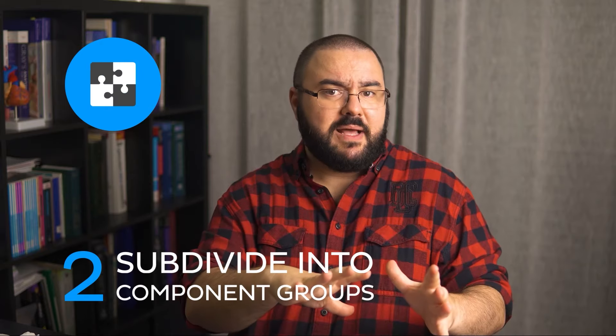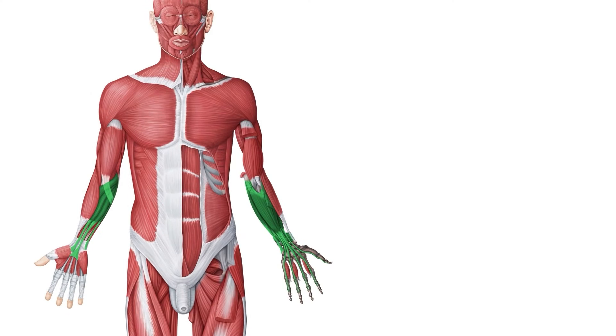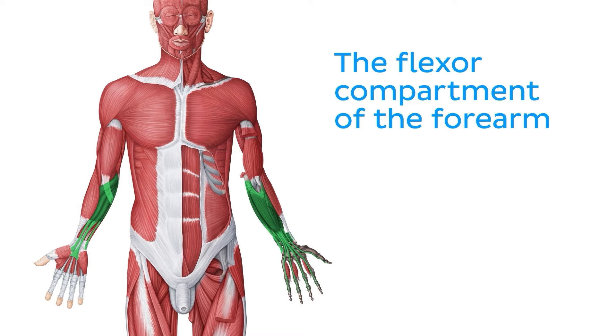Tip number two: subdivide muscles into component groups. Dividing and conquering can be a good strategy when learning muscles. We went from splitting them into regions — now the goal is to subdivide them into groups. Groups of muscles within regions may have similar actions, attachments, or innervations, such as the flexor compartment of the forearm. The muscles within this group typically function to flex the wrist and receive similar innervation. Some of the muscles from the flexor group even originate from the same location. Learning the muscles by groups will aid in developing your knowledge of surrounding structures and help you identify the many similarities across adjacent muscles, making your study easier.